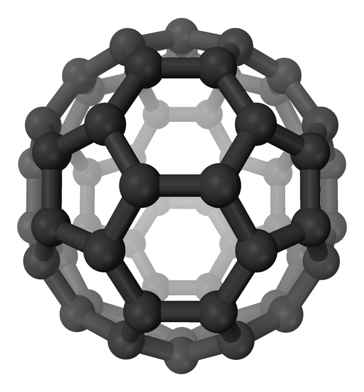Tholins are not one specific compound, but rather are descriptive of a spectrum of molecules, including heteropolymers, that give a reddish organic surface covering on certain planetary surfaces. Sagan and Kari note: the properties of tholins will depend on the energy source used and the initial abundances of precursors, but a general physical and chemical similarity among the various tholins is evident.